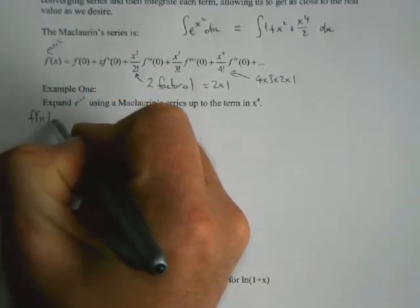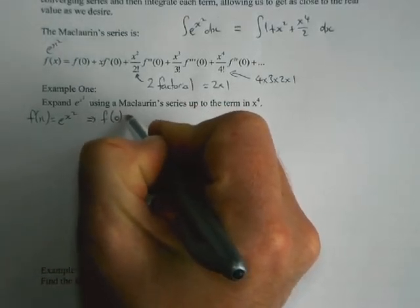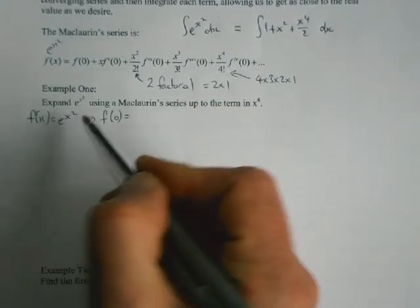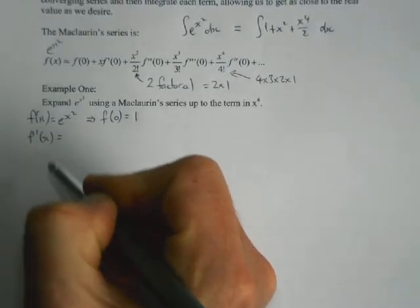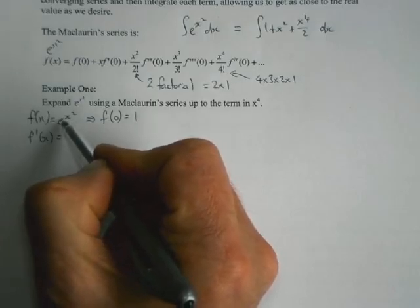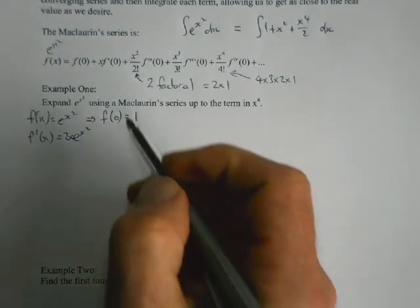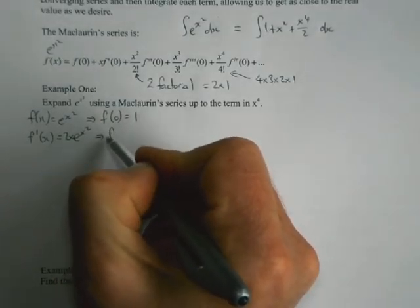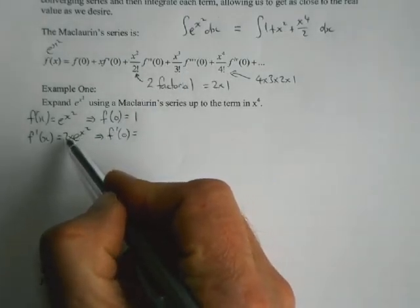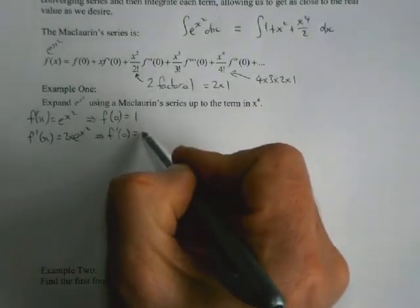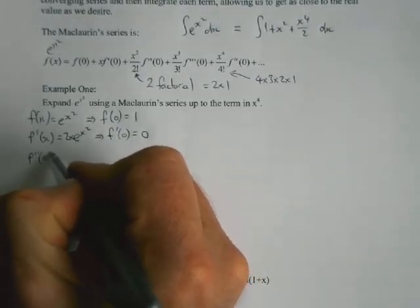So my function I'm working with is e to the x squared. And I need to evaluate that at the point 0. So f of 0, 0 squared is 0, e to the power of 0 is 1. And I'm going to need the derivative of it. So if I differentiate e to the x squared, it's a chain rule. So the derivative of e to the x is still e to the x times the derivative of the inside bit, which in this case is 2x. And now I want to evaluate that at 0. Well, 2 times 0 is 0, and the rest is irrelevant, so it's going to be 0.